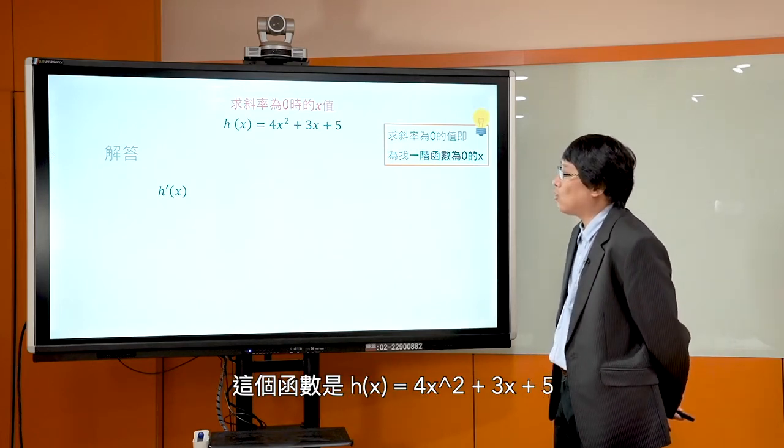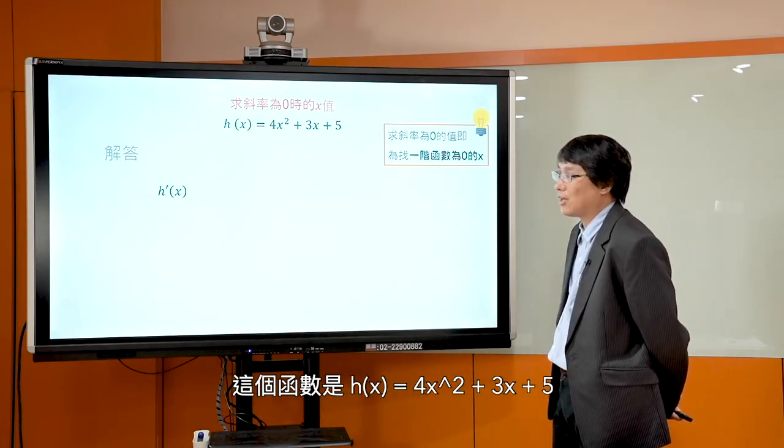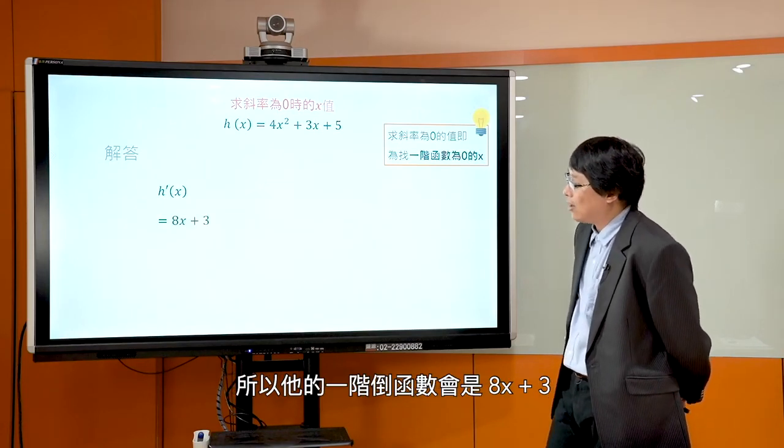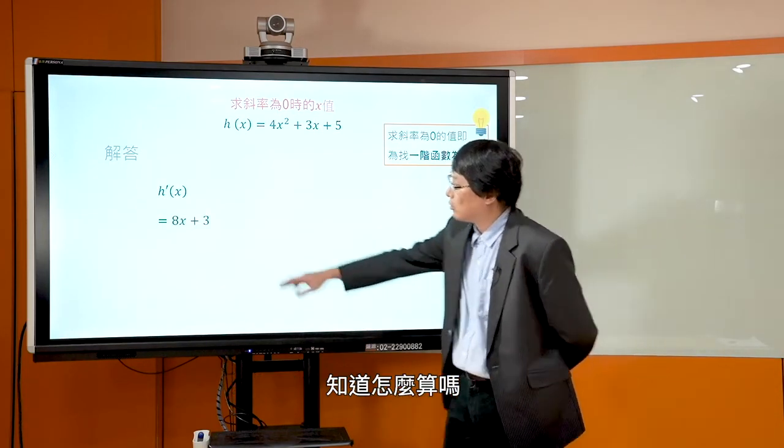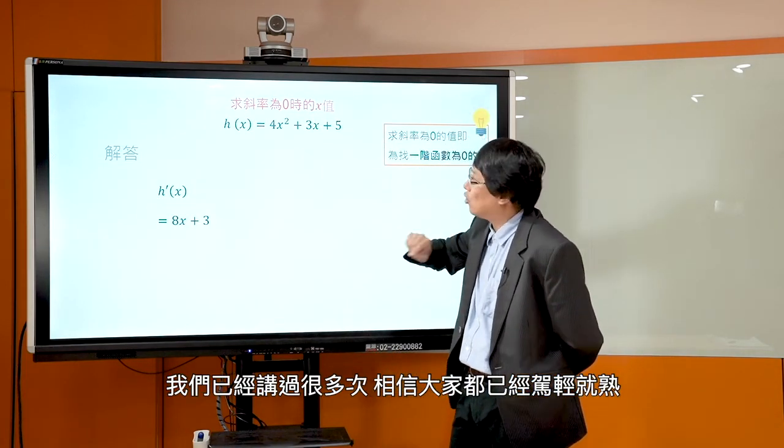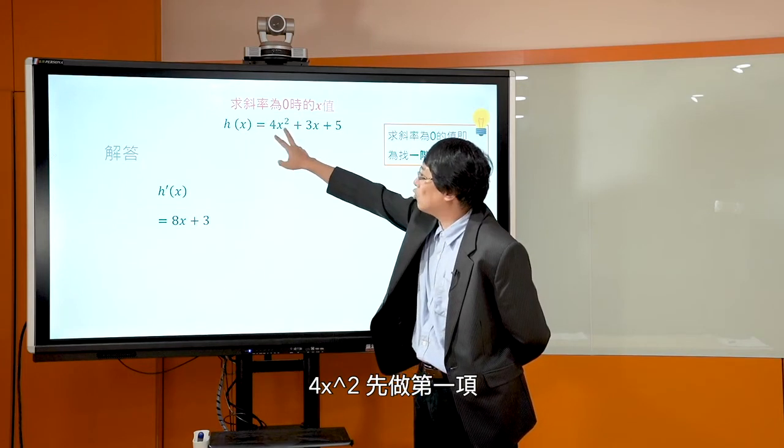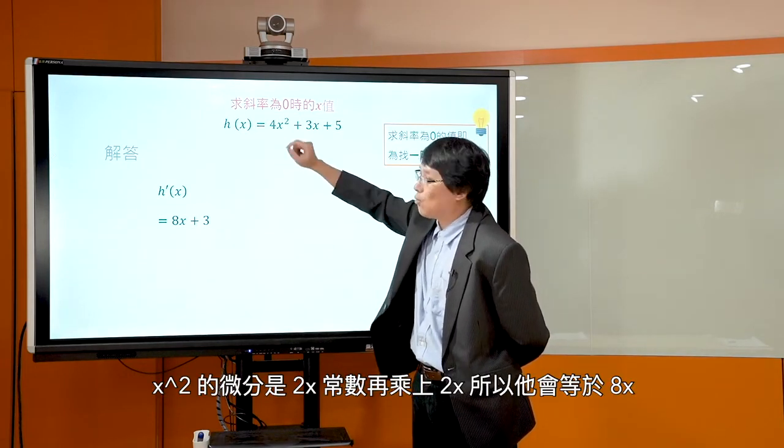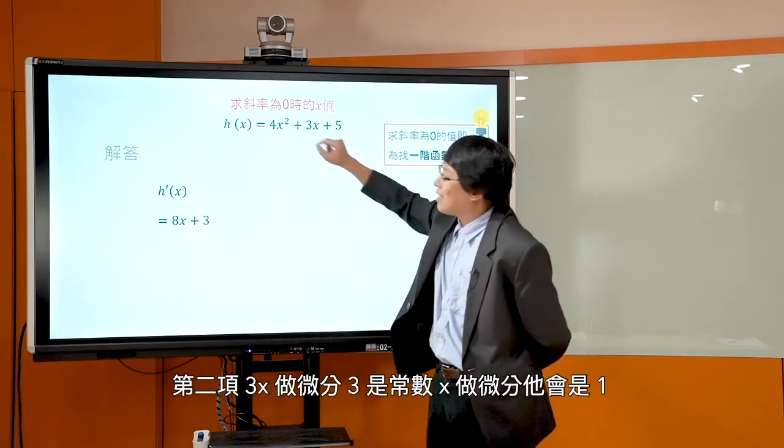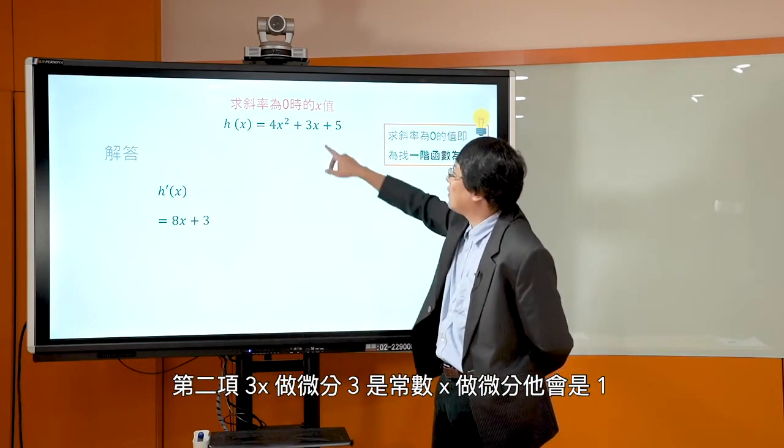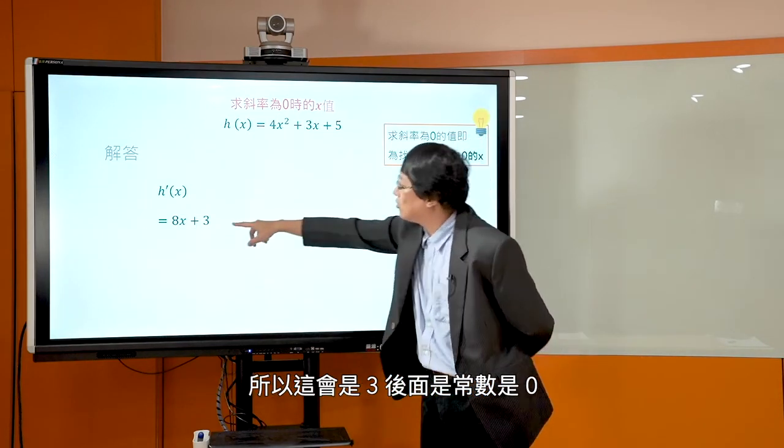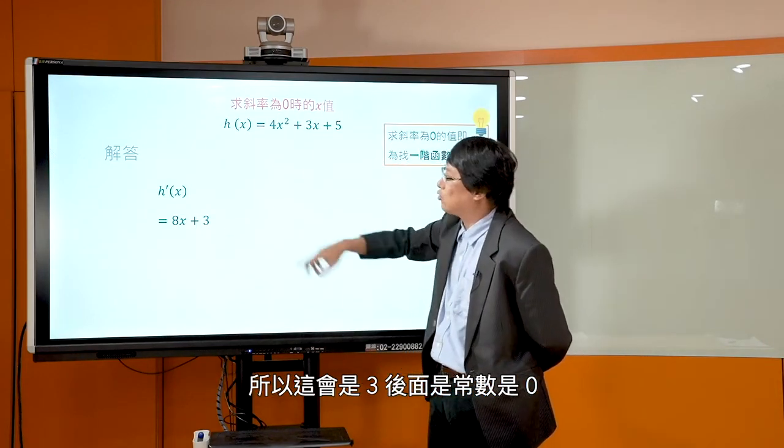所以首先第一步，你要求它的一阶导函数是什么。这个函数是 H(x) = 4x² + 3x + 5，所以它的一阶导函数会是 8x + 3。知道怎么算吗？我们已经讲过很多次，相信大家都已经驾轻就熟。4x² 先做第一项，x² 的微分是2x，常数再乘上2x，所以它会等于8x。第二项 3x 做微分，3是常数，x 做微分它会是1，所以就会是3。后面常数会是0。